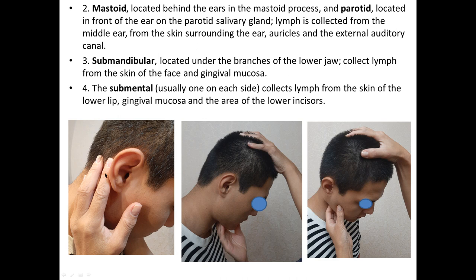Next are mastoid lymph nodes, located behind the ears in the mastoid process. Here I demonstrate how to correctly palpate the mastoid lymph nodes. You should also palpate the parotid lymph nodes, which are located in front of the ear on the parotid salivary gland. Lymph is collected from the middle ear, from the skin surrounding the ear and auricles, and from the external auditory canal.